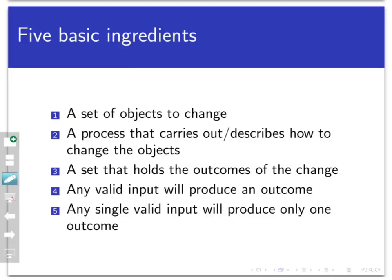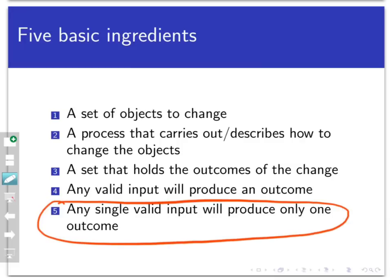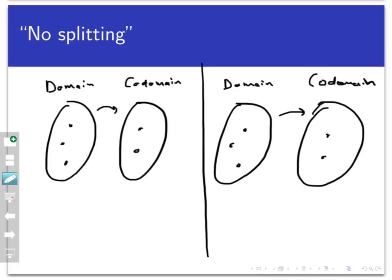One of those is the fifth one on this list: that a single valid input must produce only one output. Or said differently, it's not possible for a single input to produce two or more outputs. We might refer to that as the no splitting rule. Under any function, every point in the domain must map to one output, like this.